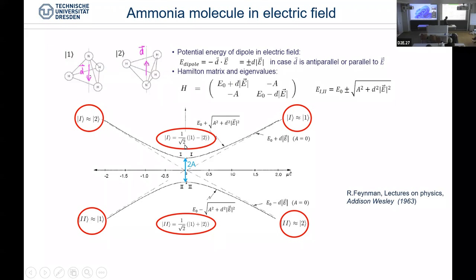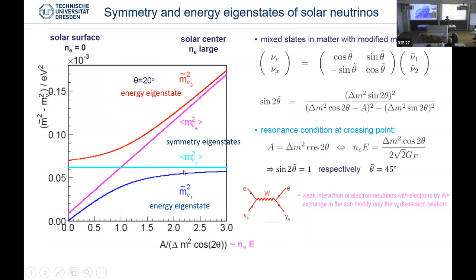If you apply explicit symmetry breaking to this system, you turn over the energy eigenstates — which are symmetric mixtures — into the symmetry eigenstates, for example with the dipole moment up or down. This also happens in very different systems. I show how this is seen in solar neutrinos: electron neutrinos produced in the inner part of the sun. If you measure the flux of solar neutrinos at Earth, at higher neutrino energies it is reduced compared to what you expect from theory of nuclear fusion in the center of the sun.